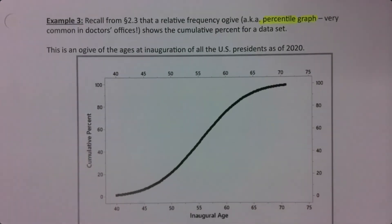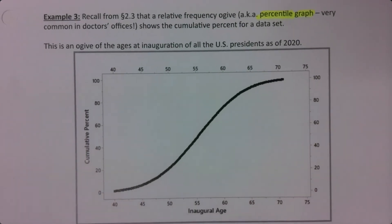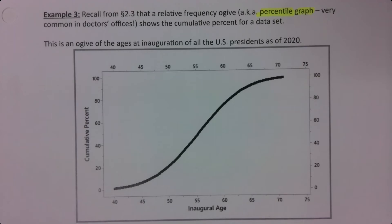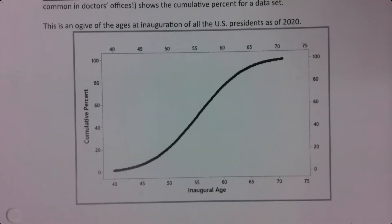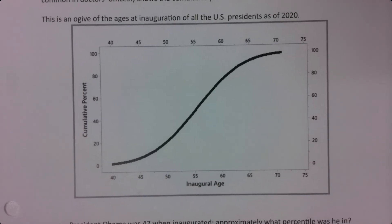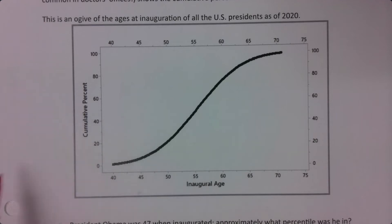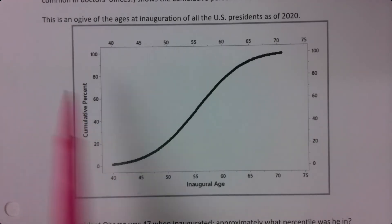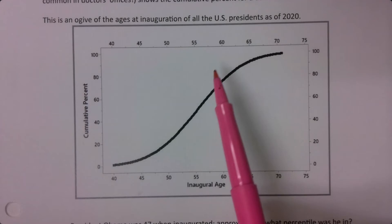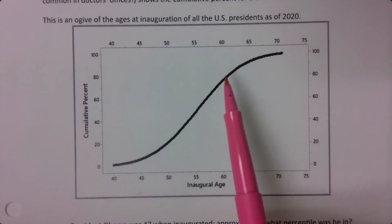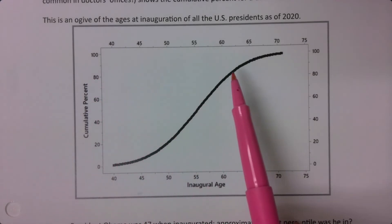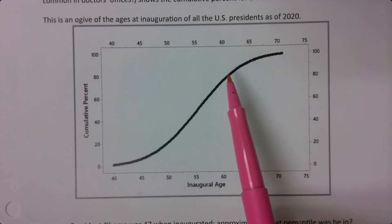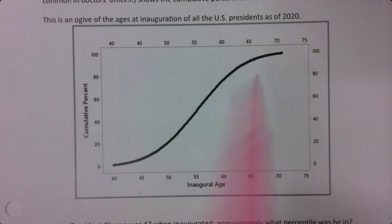We're going to look at an ogive showing the ages at inaugurations of all the US presidents as of 2020. This is a cumulative percentage graph — in other words, a percentile graph — because when you look at a score here, you can see that 80% of the ages of the presidents were less than or equal to that value.